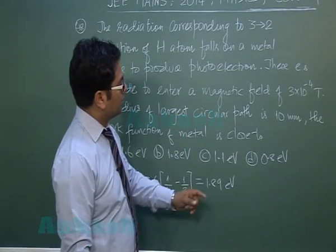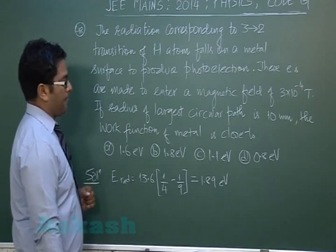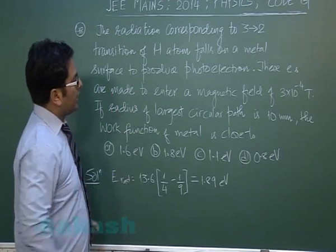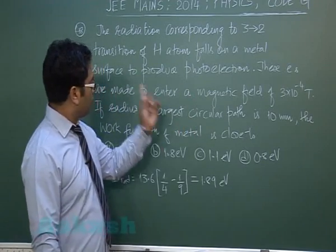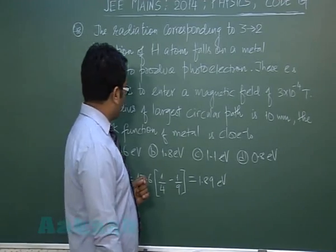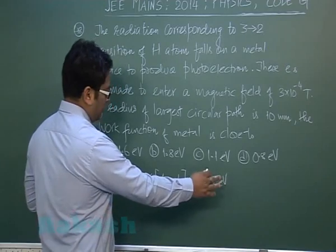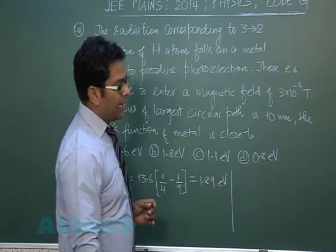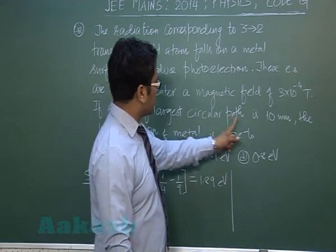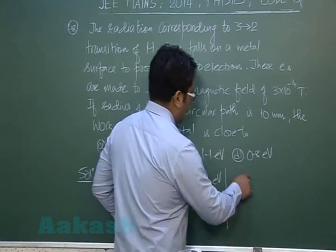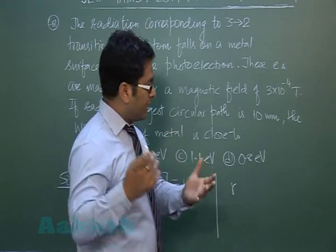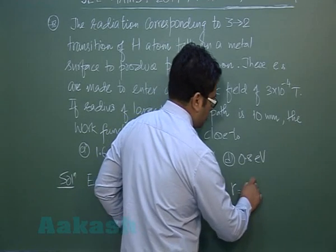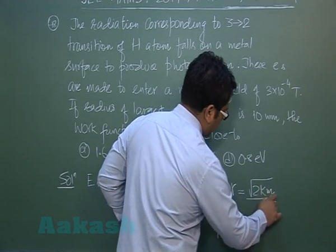These electrons are made to enter a magnetic field of 3 × 10⁻⁴ Tesla. The radiation falls on the metal, photoelectrons are emitted, and those electrons move in a circular path. We need to calculate the work function. The largest circular path radius is 10 millimetres, corresponding to maximum kinetic energy, and R equals √(2KM) divided by BQ.